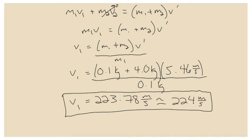That's it for the ballistic pendulum. The most important thing to remember is you have to do the energy analysis first to find V' in the momentum collision, then go back to find the initial velocity of the bullet. That brings us to the new topic for today, which we'll spend the rest of this video on: center of mass.